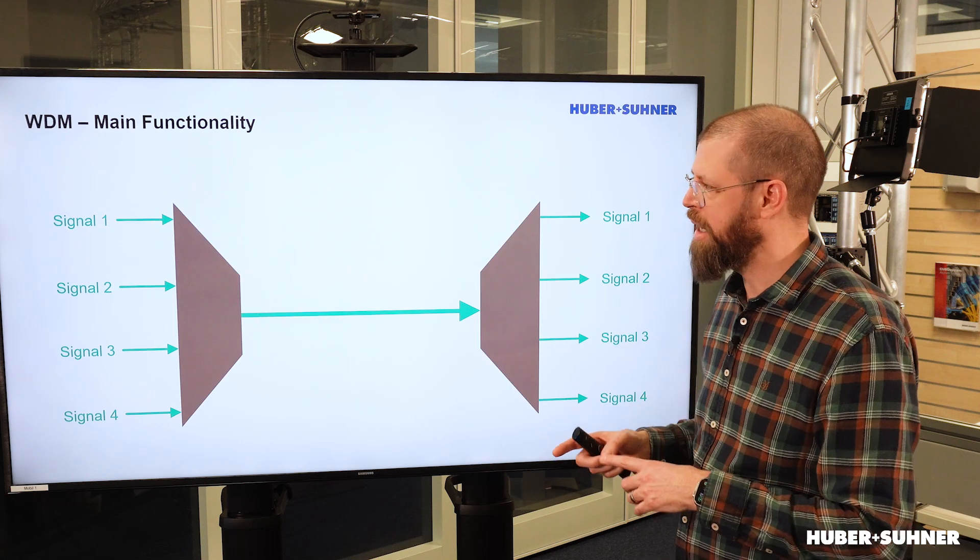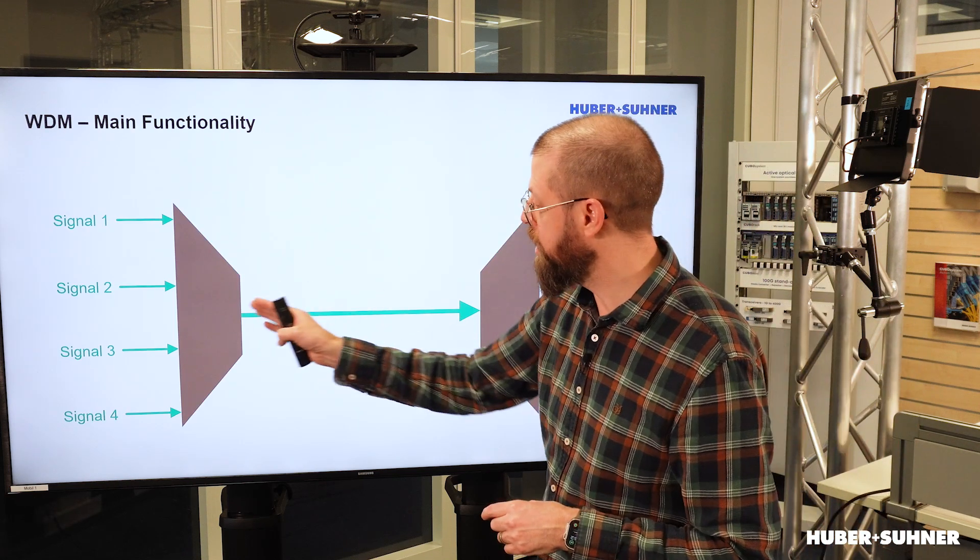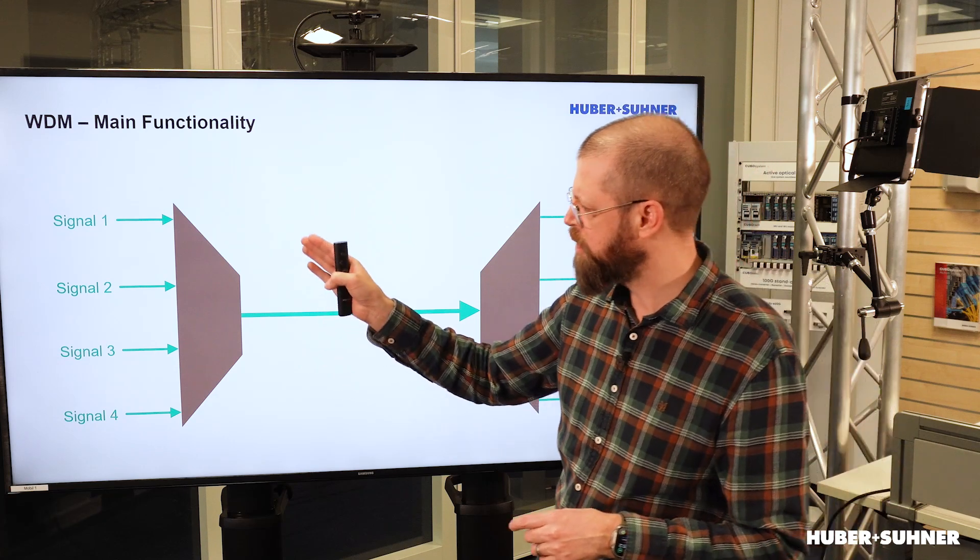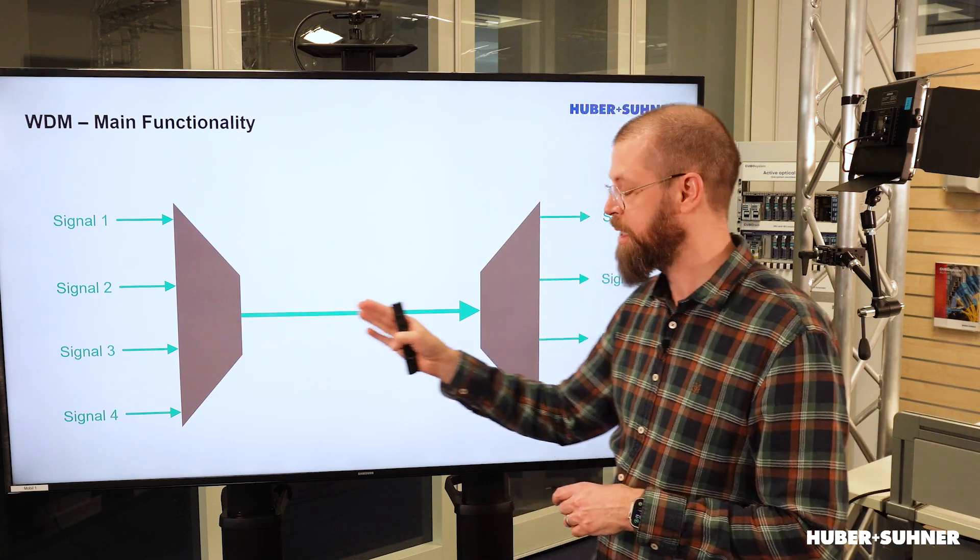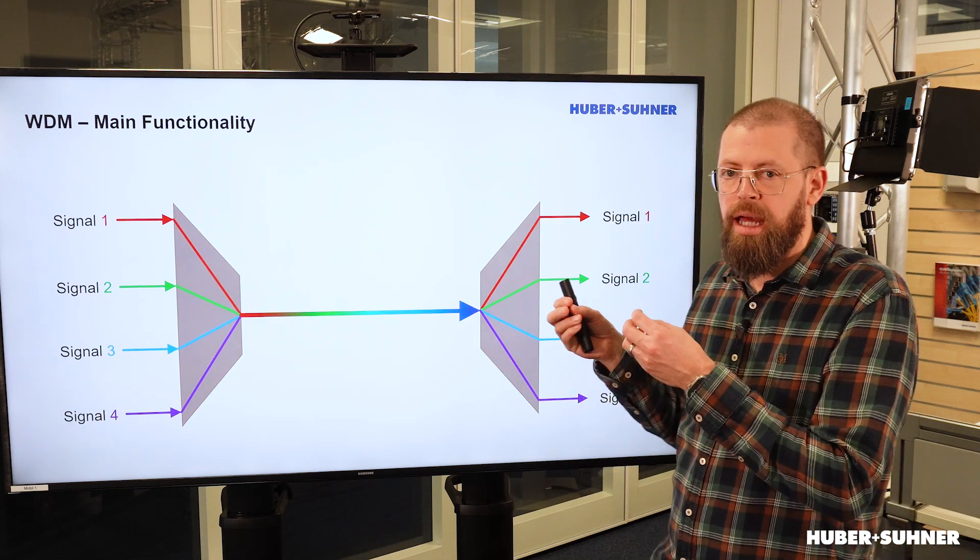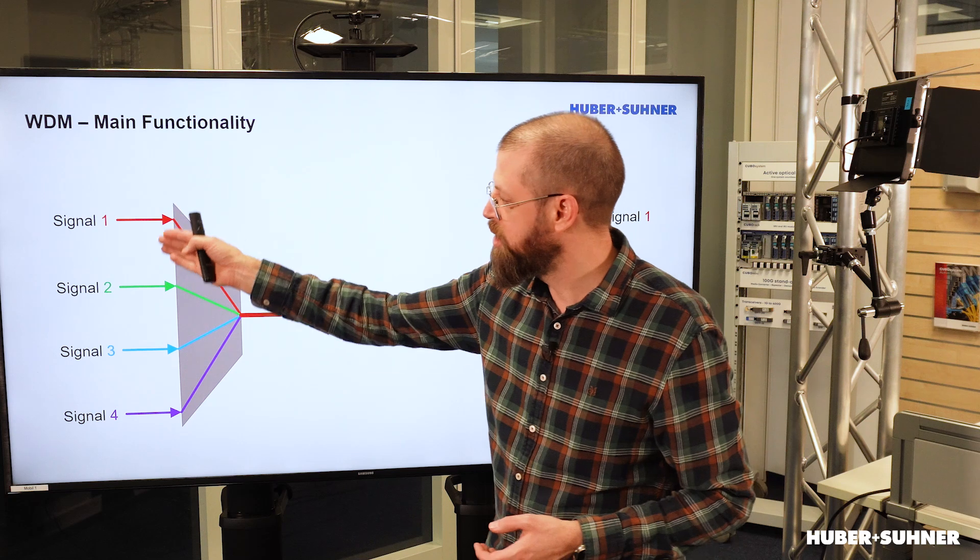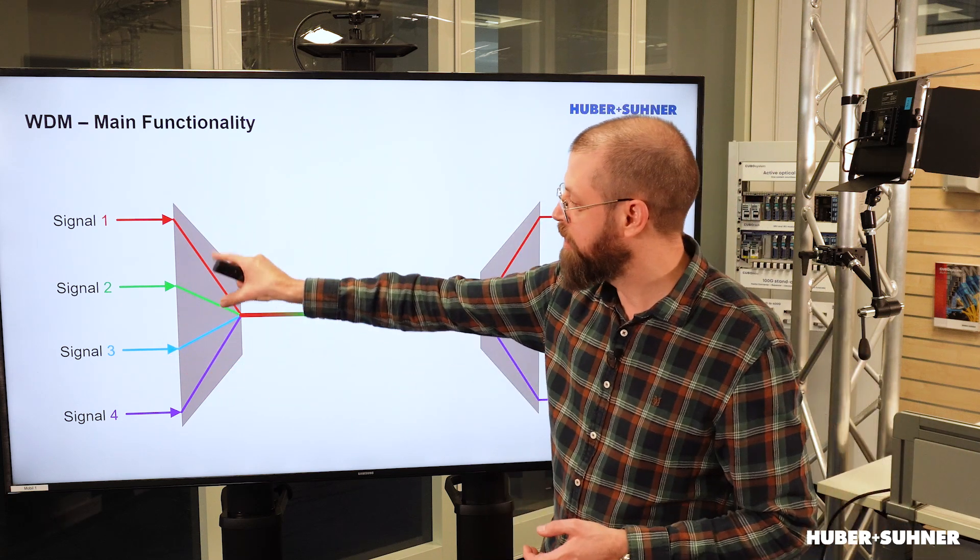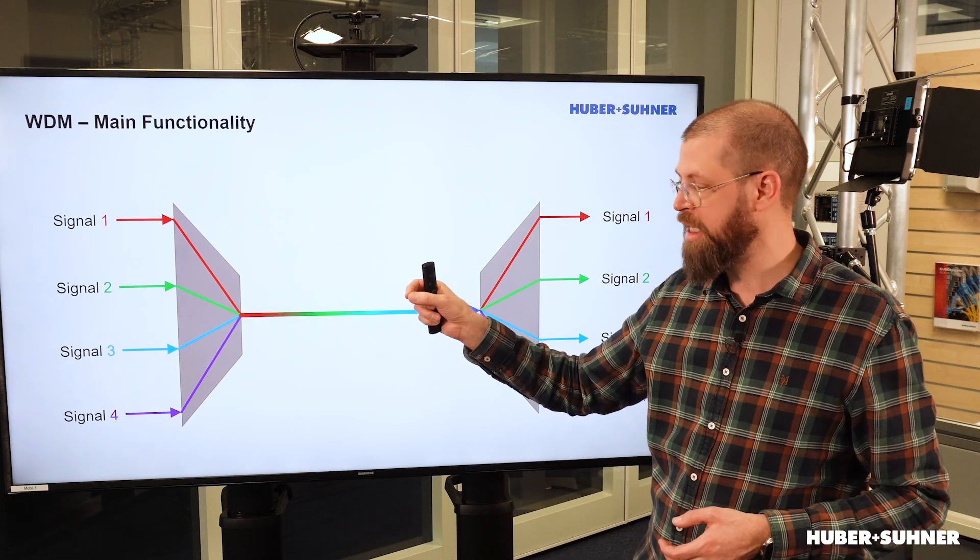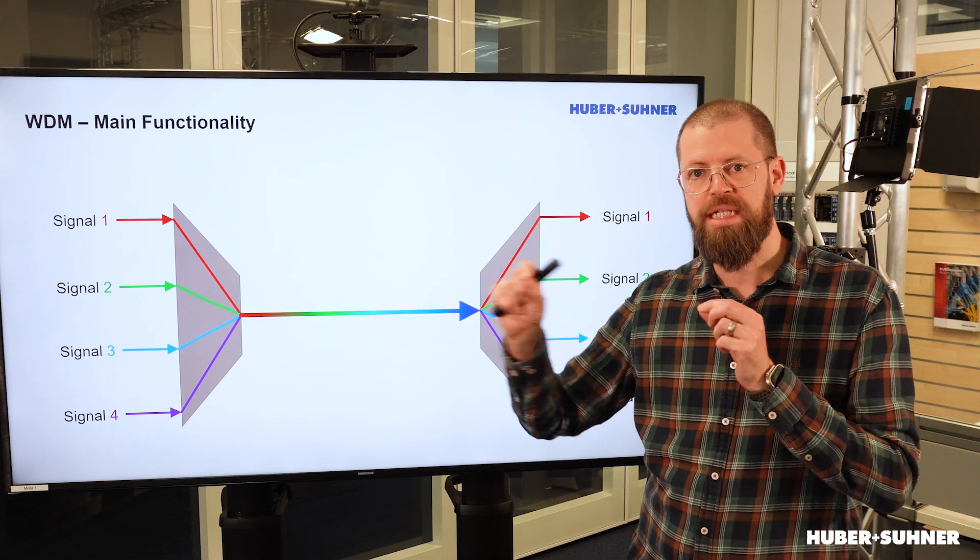Now, if we go to WDM, the situation is slightly different because, number one, we will always have two sides of the link. In other words, we will always have an optical multiplexer and an optical demultiplexer. The optical multiplexer takes different signals that are on different wavelengths and will combine these signals with filter technology, for example, and combine them onto a single fiber.